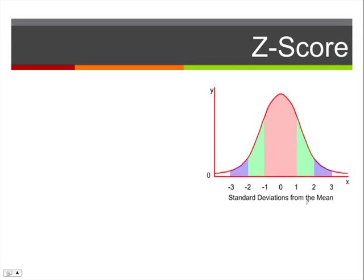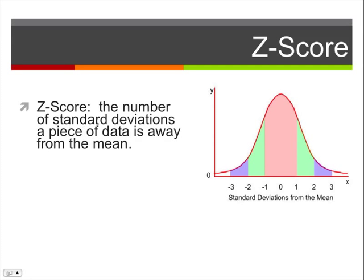To talk about a normal distribution, we have something called a z-score. A z-score is the number of standard deviations a piece of data is away from the mean. The mean is right in the center — we call this x-bar. If you go one standard deviation away, you get x-bar plus one standard deviation, and if you go two, this is a z-score of 2.